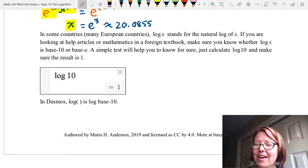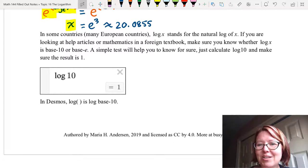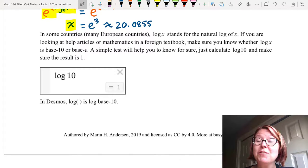And you can perform a very simple test to help you know for sure. Just calculate log 10 and make sure the result is 1. So if you type log 10 into Desmos, you should see equals 1. If you type in log 10 and see something else, then most likely the software you're using thinks that log is the natural log.